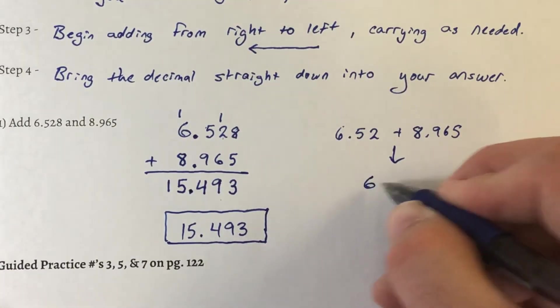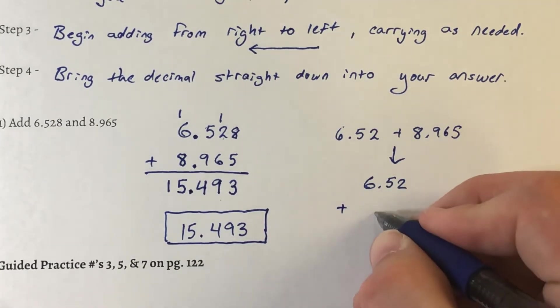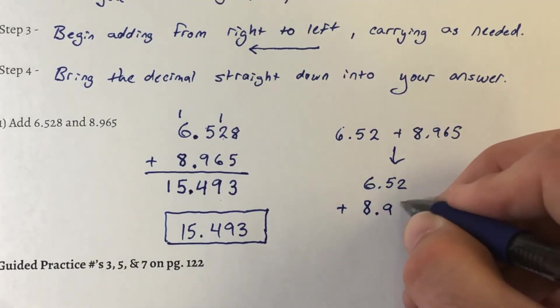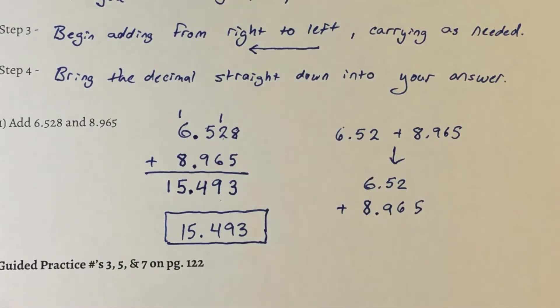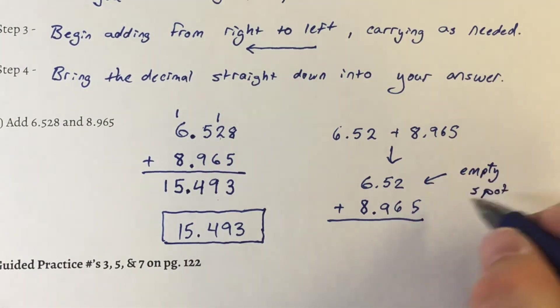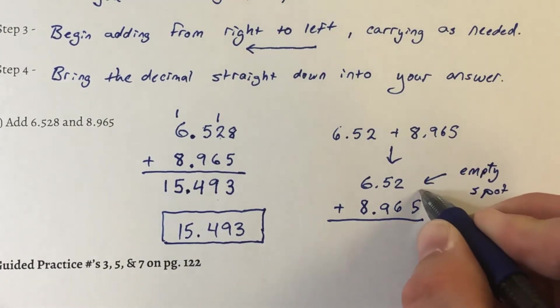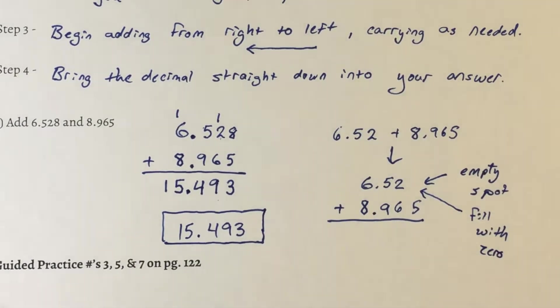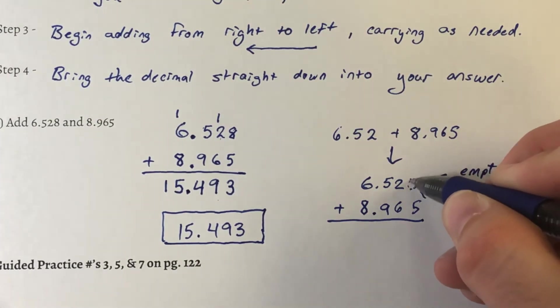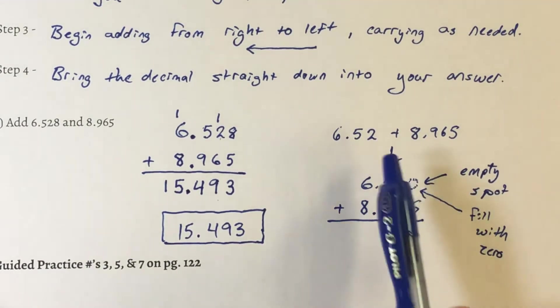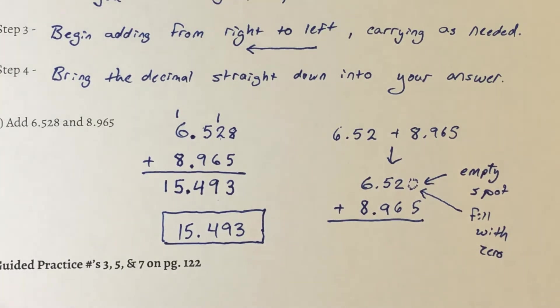Well, I would write 6.52. I would line up my decimal. So the 8 would go under the 6, 9 under the 5, and the 6 under the 2. Well, the 5 has to go right there. Notice I have an empty spot. So empty spots would have to be filled with zeros. So basically, you're going to put a zero there and it wouldn't be empty anymore. So you would do 0 plus 5, 2 plus 6, 9 plus 5, 6 plus 8 while carrying and then bringing your decimal straight down.